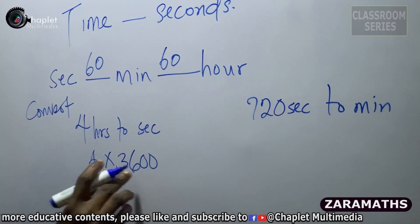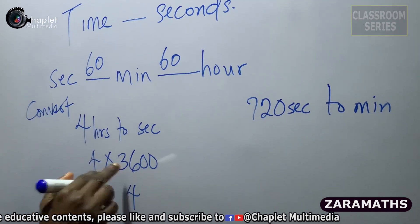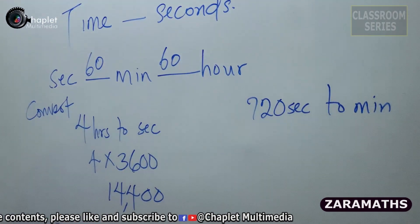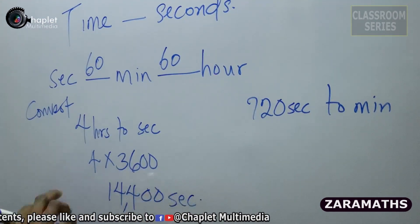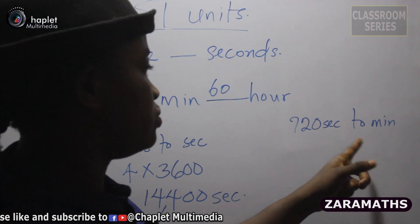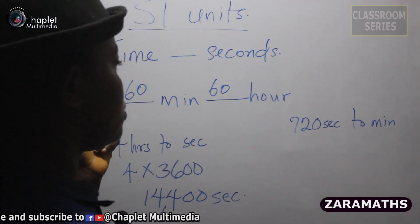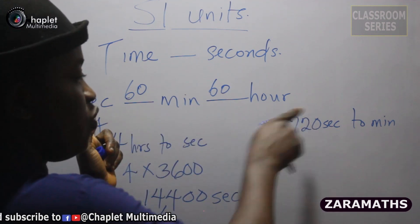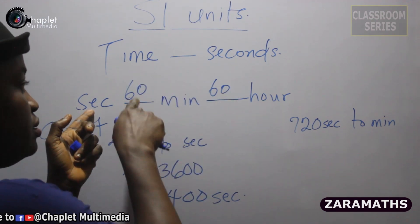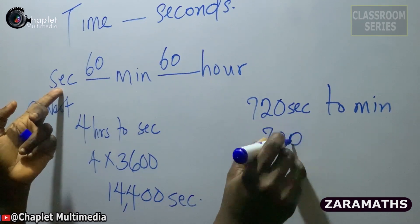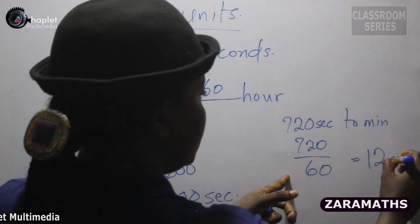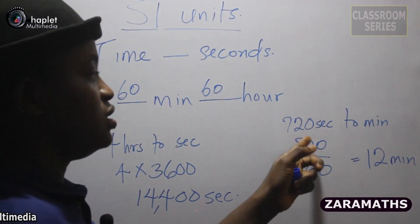So 4 hours to seconds becomes 4 times 3600, which gives us 14,400 seconds. So 4 hours is 14,400 seconds. Now I want to convert 720 seconds to minutes. From seconds to minutes we are moving forward, so we divide by 60. This becomes 720 divided by 60, which is 12. So 12 minutes is the same as 720 seconds.